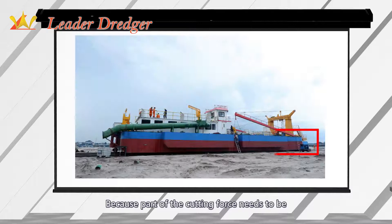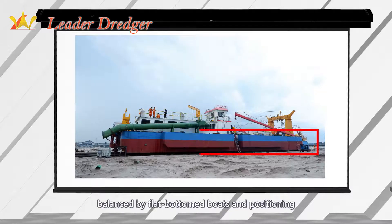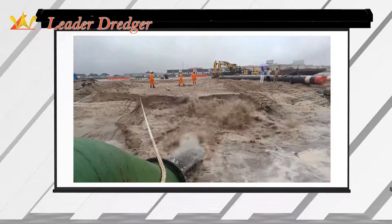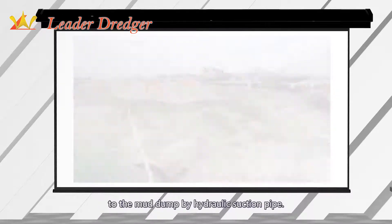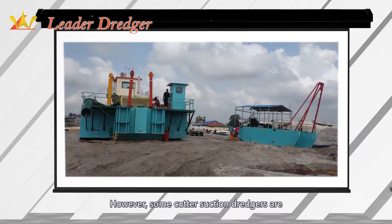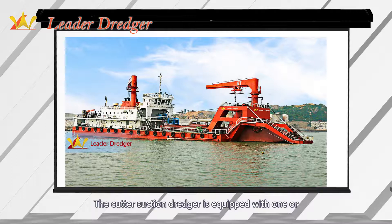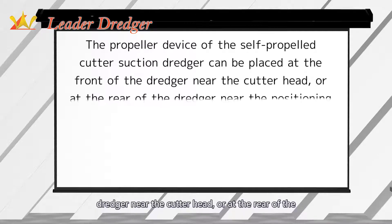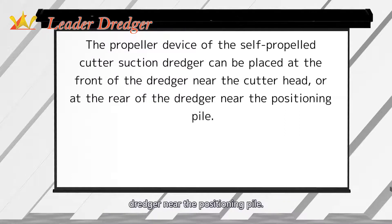Because part of the cutting force needs to be balanced by the flat-bottomed hull and positioning piles, the flat-bottomed hull of a cutter suction dredger is heavier than other stationary dredgers. The excavated mud-water mixture is transported to the mud dump by hydraulic suction pipe. However, some dredgers are equipped with barge unloading systems. The dredger is equipped with one or more dredge pumps, one of which is placed on the cutter arm. The propeller device of the self-propelled cutter suction dredger can be placed at the front near the cutter head, or at the rear near the positioning pile.